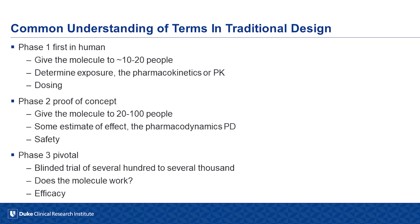Phase two is proof of concept, where we give the molecule to somewhere between 20 and 100 people. We're looking for some estimate of effect — the pharmacodynamics of the drug. Maybe we want to see if the antibiotic kills the bacteria, or if the antihypertensive actually lowers blood pressure in a few people. We also want to see safety.